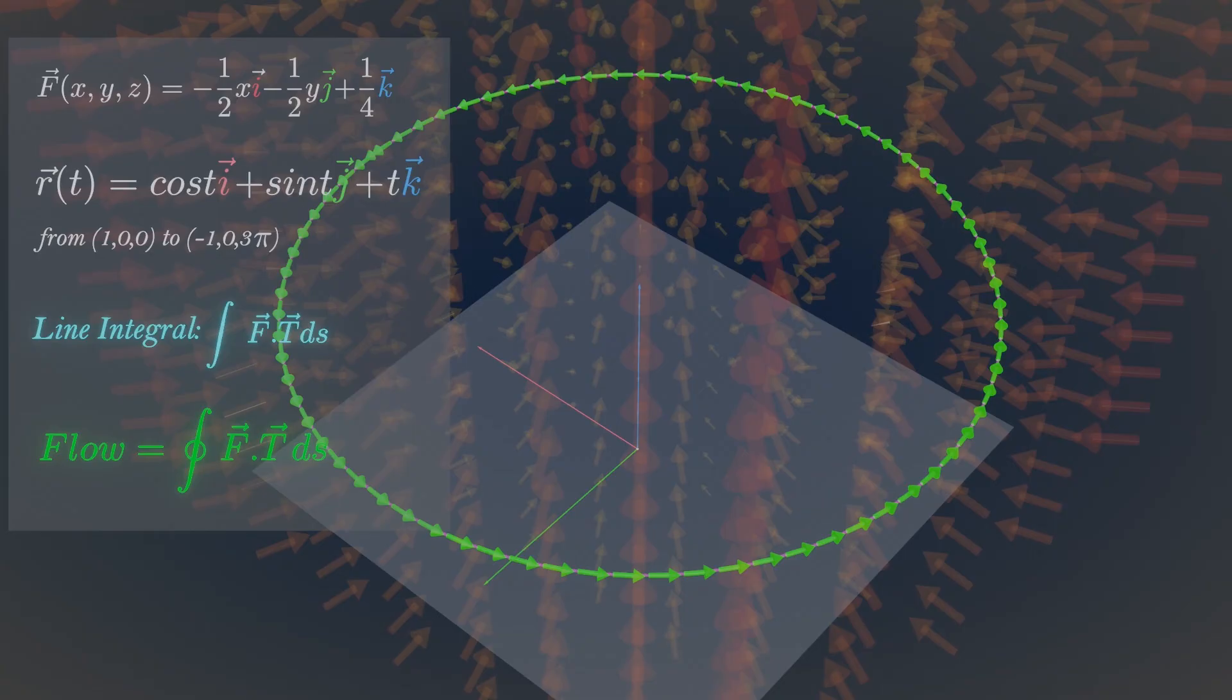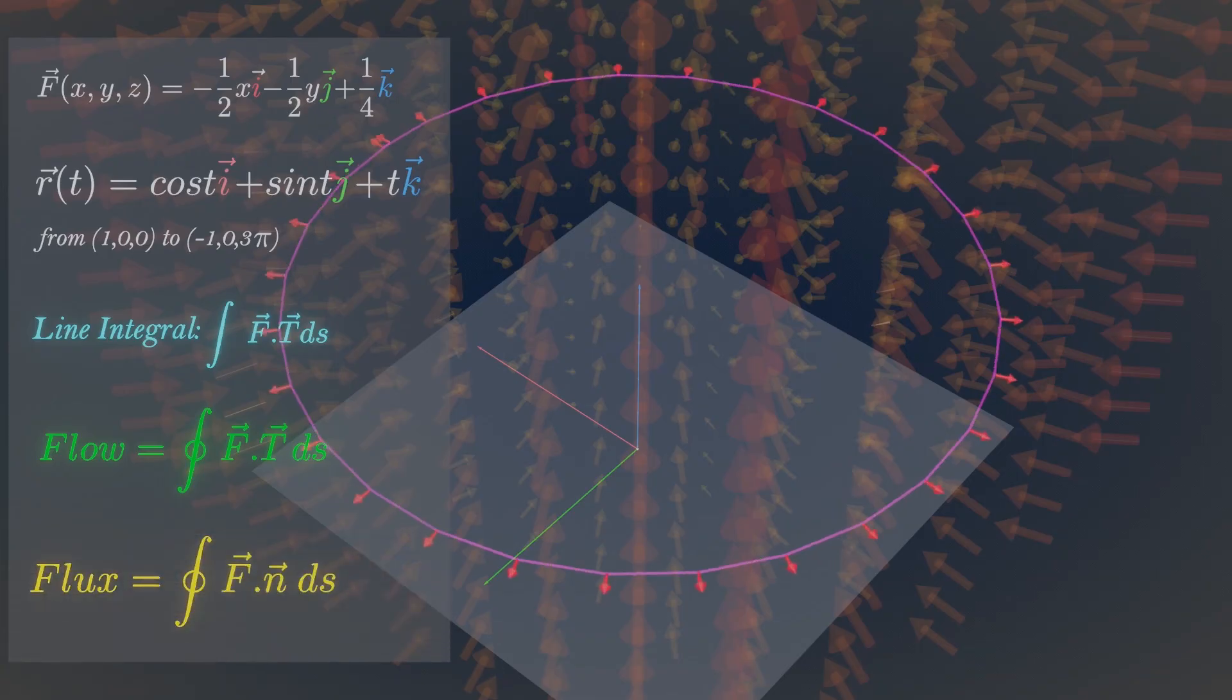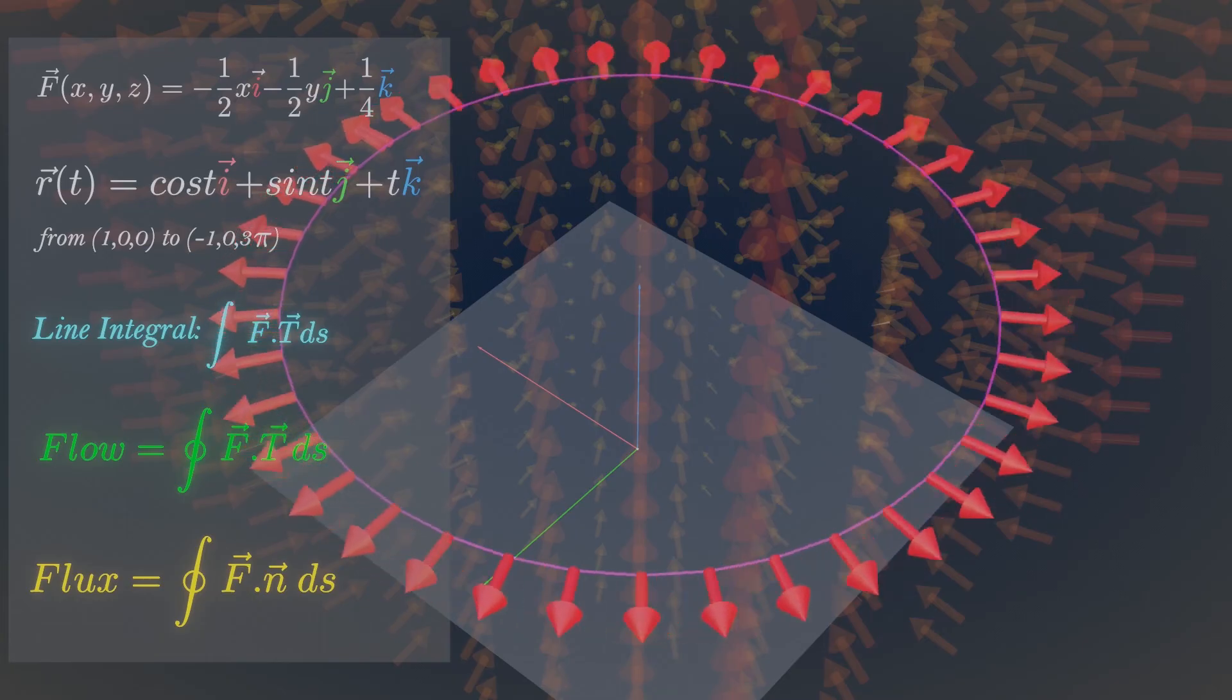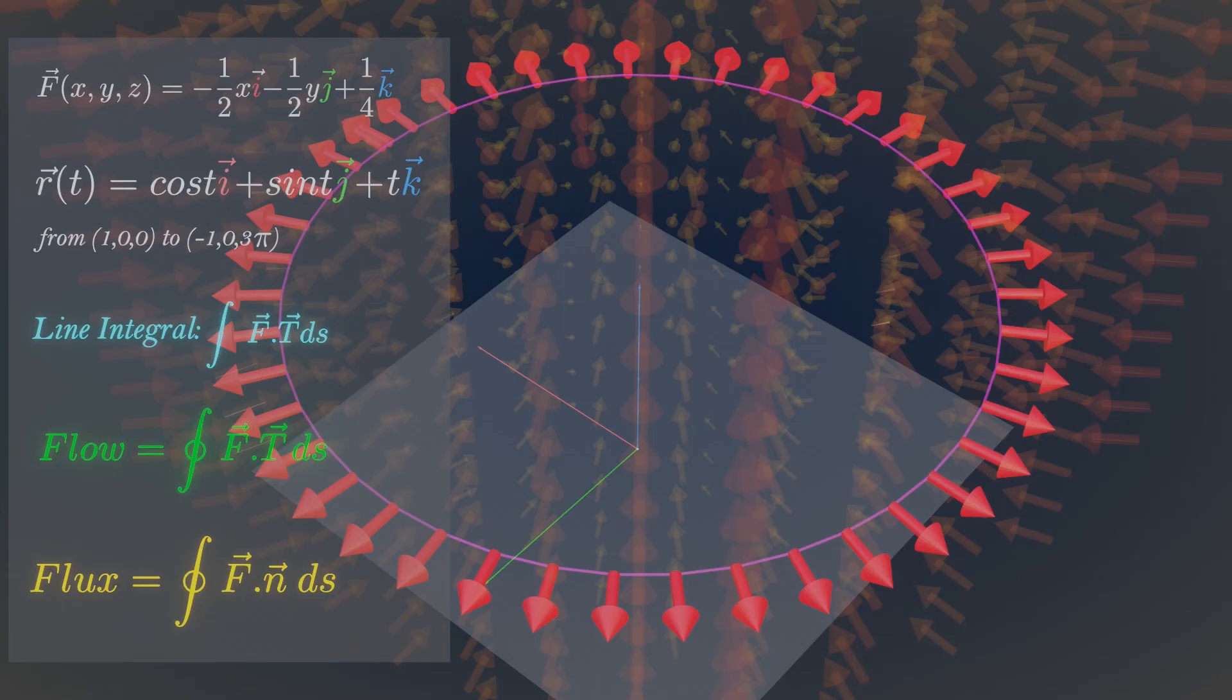Whereas the rate at which a fluid is leaving or entering a region enclosed by a closed curve gives the flux. This is the integral of velocity vectors and unit normal vectors along a curve. Notice the difference between flux and circulation. Flux is the integral of the normal component of a vector field, circulation is the integral of the tangential component of a vector field.